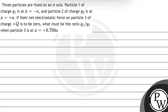Let's read this question. The question says: 3 particles are fixed on an x-axis. Particle 1 of charge q1 is at x equals minus a. Particle 2 of charge q2 is at x equals plus a. If their net electrostatic force on particle 3 of charge plus capital Q is to be 0, what must be the ratio q1 upon q2 when particle 3 is at x equals plus 0.750a?